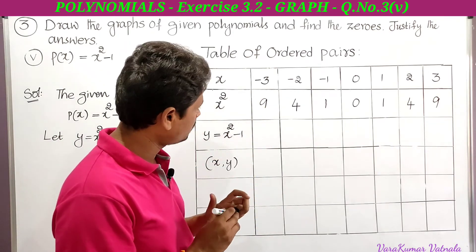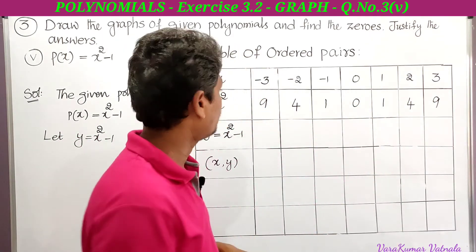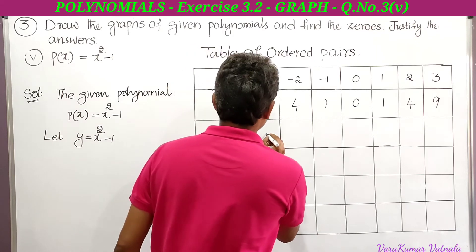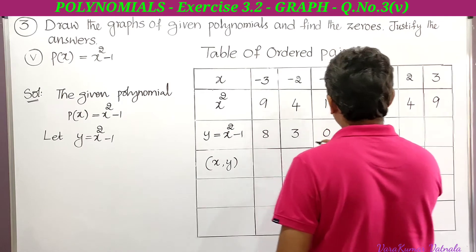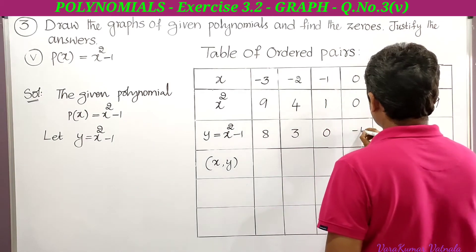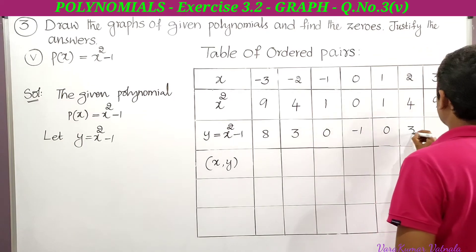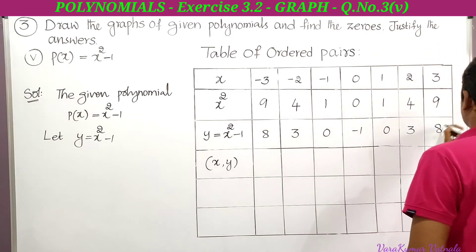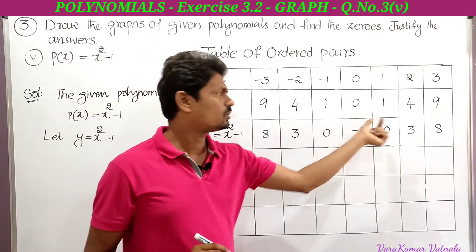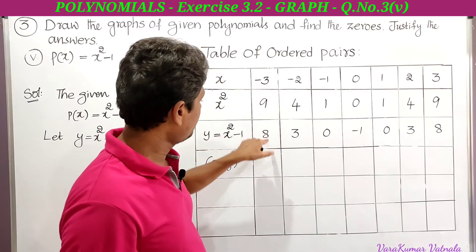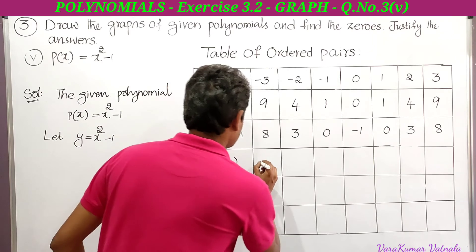Next, since we need x² − 1, we subtract 1 from all the x² values. So: 9 − 1 = 8, 4 − 1 = 3, 1 − 1 = 0, 0 − 1 = −1, 1 − 1 = 0, 4 − 1 = 3, 9 − 1 = 8. These are the y values. By writing x and y together we get the ordered pairs. The first ordered pair is (−3, 8).